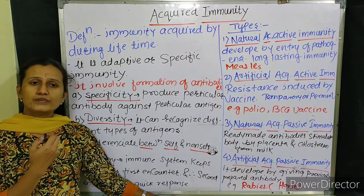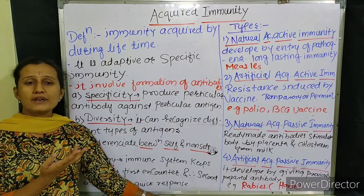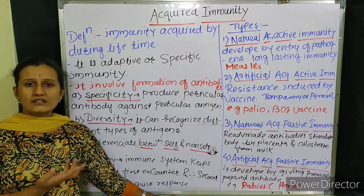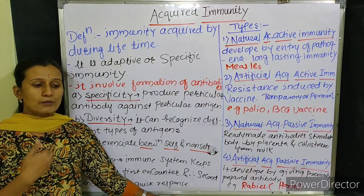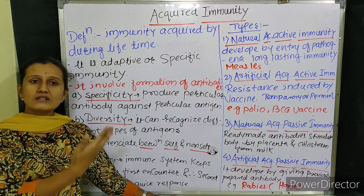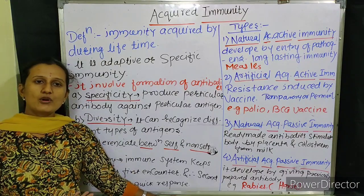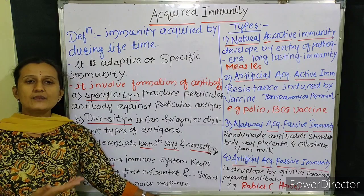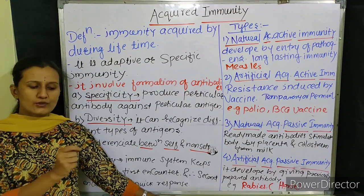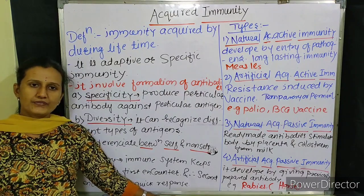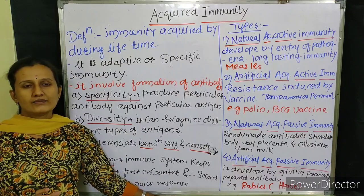Just as if someone fights with a sword, you need a shield to counter it; if someone boxes, you need to learn boxing rules to counter it. Similarly, whatever attack comes from outside, the body through acquired immunity prepares the corresponding counter — that is specificity: producing antibodies specific to the antigen.